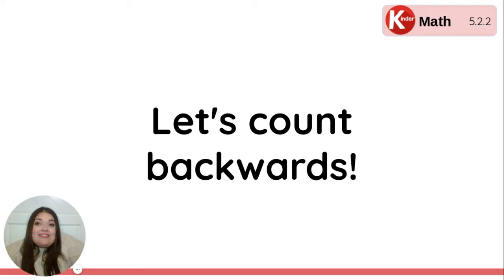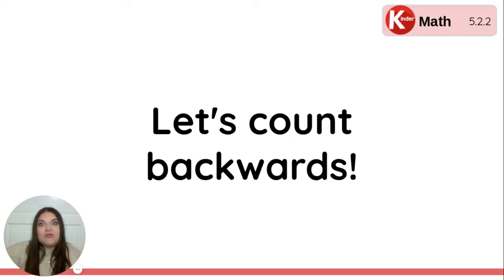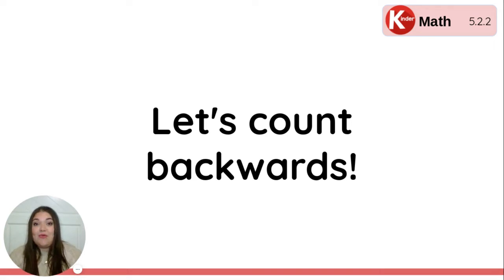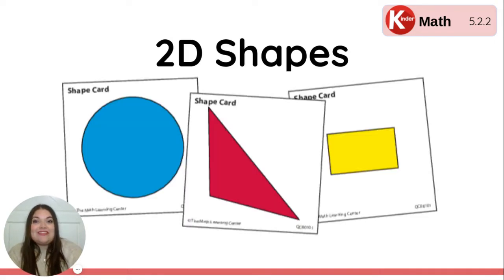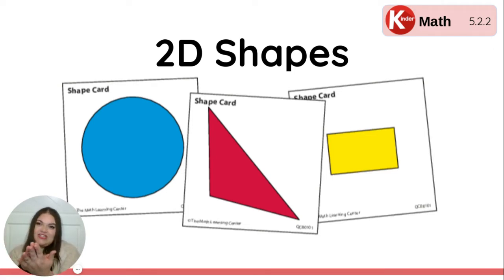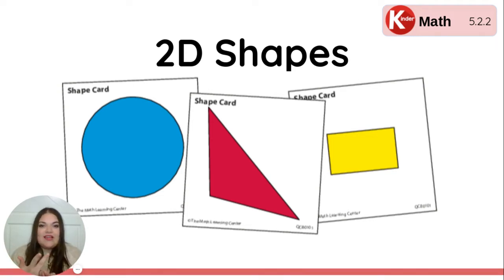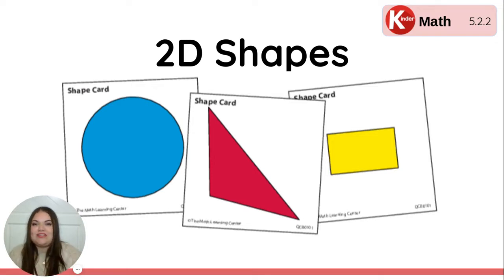Remember, counting is just a pattern. So it doesn't matter if we start on 20 and go backwards or start on 18 and go backwards — we still say the numbers in the same order. Today we're going to take a look again at our 2D shape cards. Remember, we know that 2D shapes are flat, flat, flat. And I see a circle and a triangle and a rectangle, and I know that all of those are flat 2D shapes.